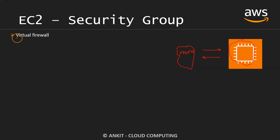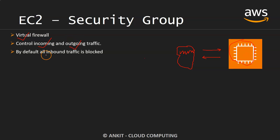Formally defined, it's like a virtual firewall by nature. This security group resides outside of the EC2 instance and protects it from many different kinds of unauthorized attacks. It controls incoming and outgoing traffic. By default, all inbound traffic is blocked — when you create an EC2 instance for the first time, no rule says anything from the outside world can access it, except a few ports being allowed.